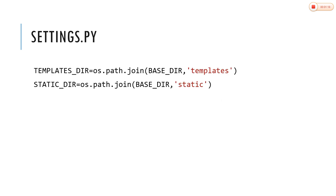In settings.py, the two major variables are: TEMPLATES_DIRECTORY, where we add the relative path of the templates folder, and STATIC_DIRECTORY, where we add the relative path of the static folder. Both of these are used in order to import the settings into settings.py.